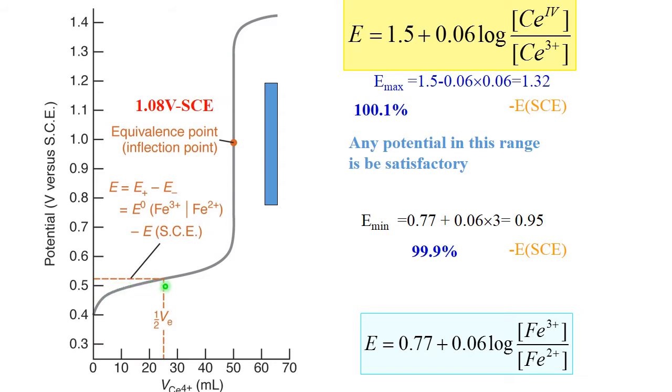When we titrate one half of our iron 2, concentrations of Fe3+ and Fe2+ will be equal. Which means log will be 0 and potential will be 0.77 minus potential of your reference electrode. That's here.